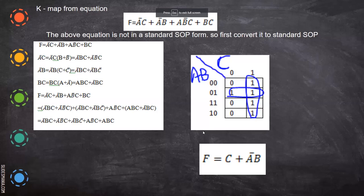Now coming to our problem. Here, if you see this equation, there are three variables needed: A, B, C. But in the first term B is missing, in the second term C is missing, and in another term A is missing. So with this, you cannot draw the Karnaugh map. This is not in a standard SOP, so you have to convert it into a standard SOP.